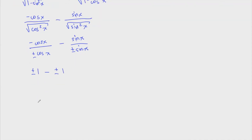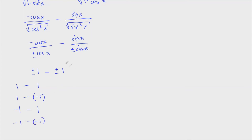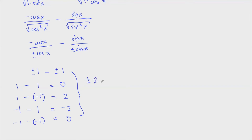We can now evaluate all possible values. We have plus or minus one, then minus plus or minus one. If we choose positive for both, we get one minus one equals zero. If positive then negative, we get one minus negative one equals two. With negative then positive, we get negative one minus one equals negative two. And negative with negative gives zero. So the answer is positive or negative two, or zero.